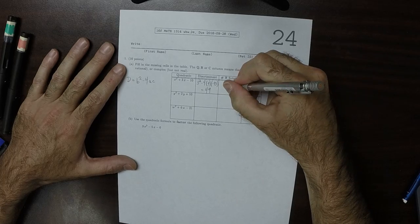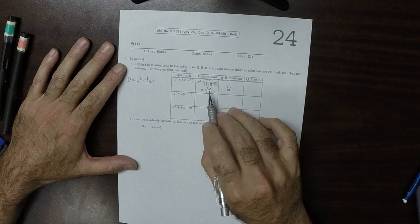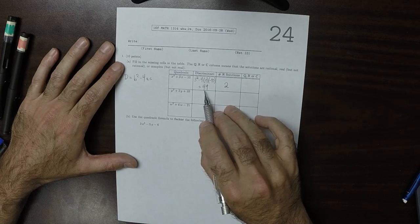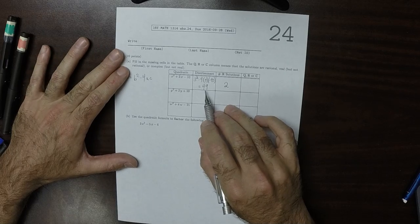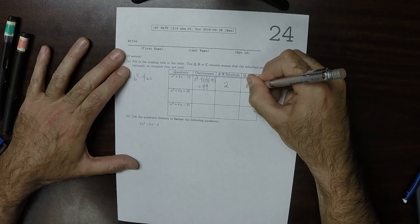That means that the number of real solutions is 2. And because 49 is a perfect square, it has a rational square root. That means that the solutions are rational.